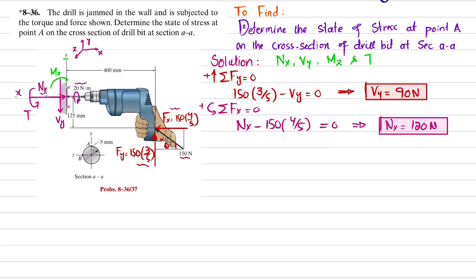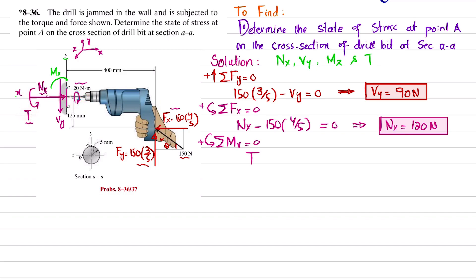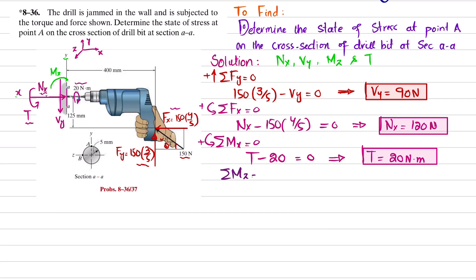Now we find the reaction torque. The sum of moments about the X axis equals zero. One torque is 20 Newton-meter clockwise, and the reaction torque is counterclockwise; taking counterclockwise as positive, the reaction torque equals 20 Newton-meter. For the moment about the Z axis, the sum of all moments about Z equals zero, taking counterclockwise as positive. MZ is clockwise, so it is taken as negative. The second moment is the horizontal force component times perpendicular distance of 125 mm.